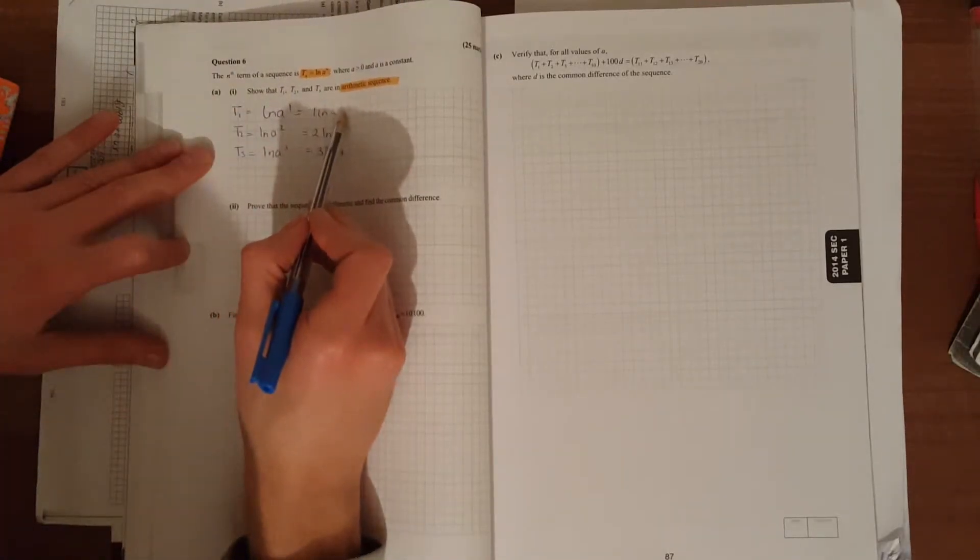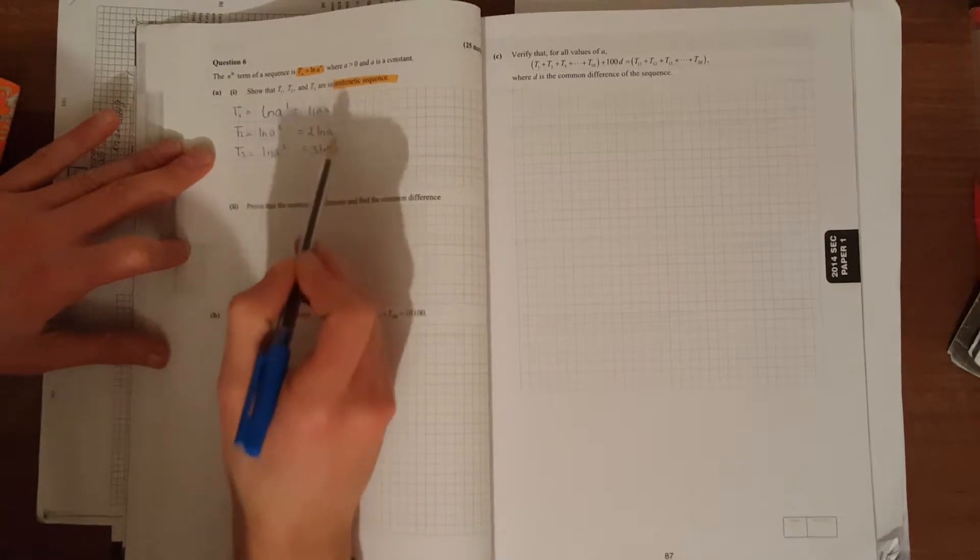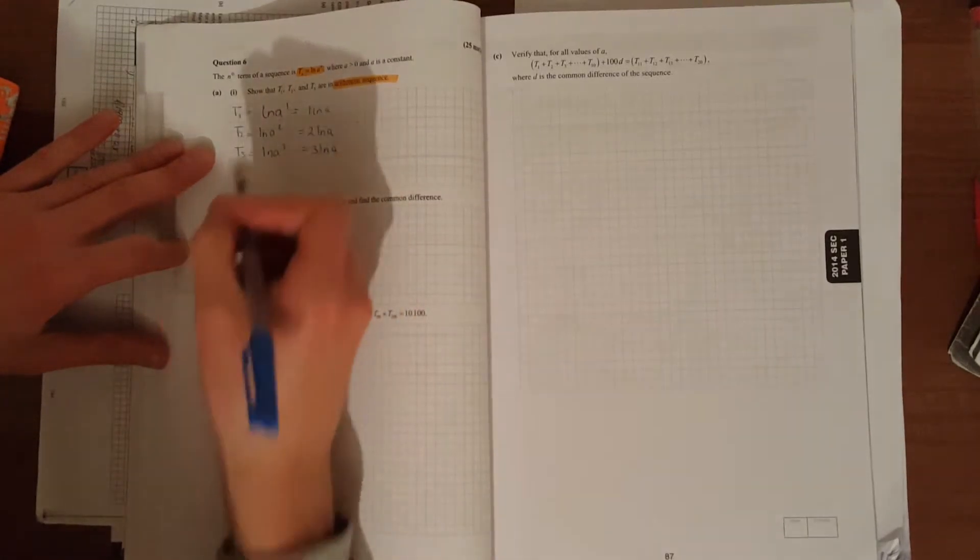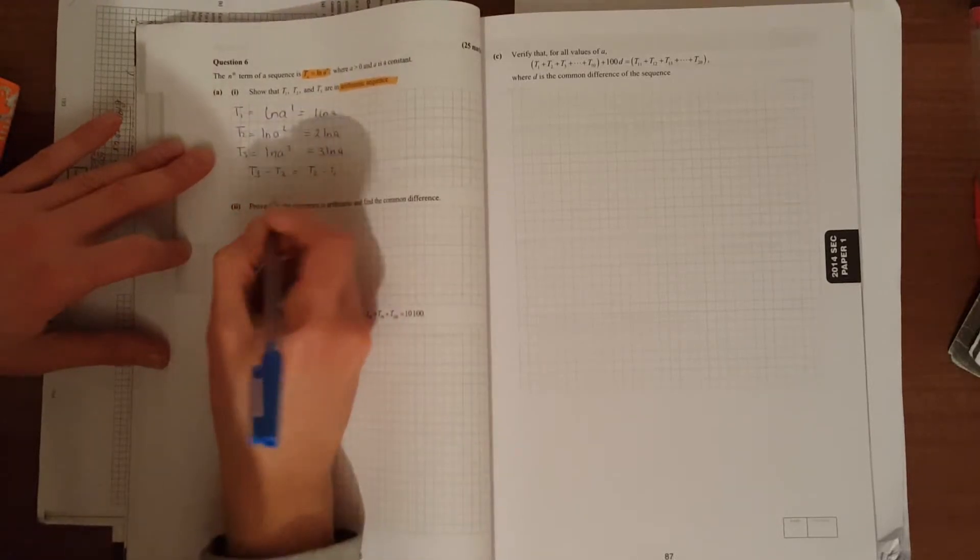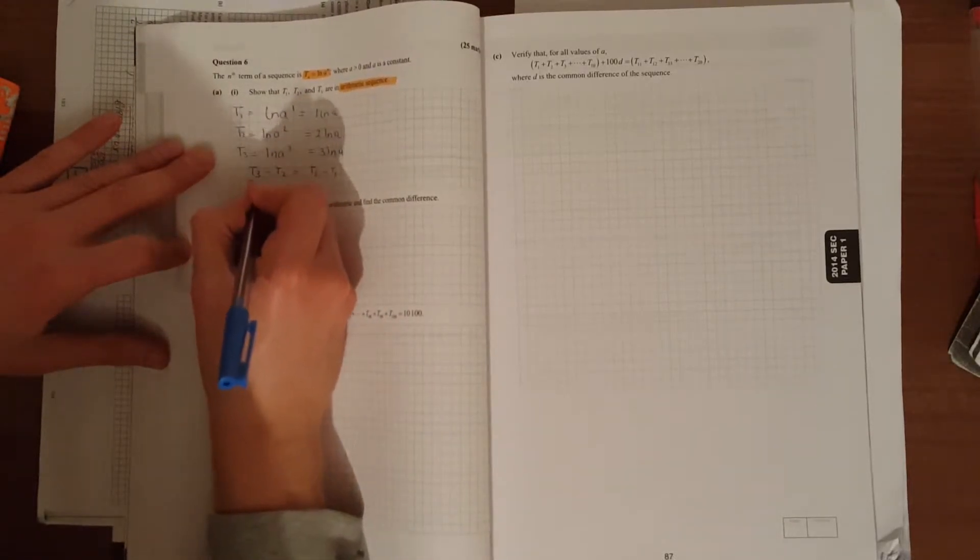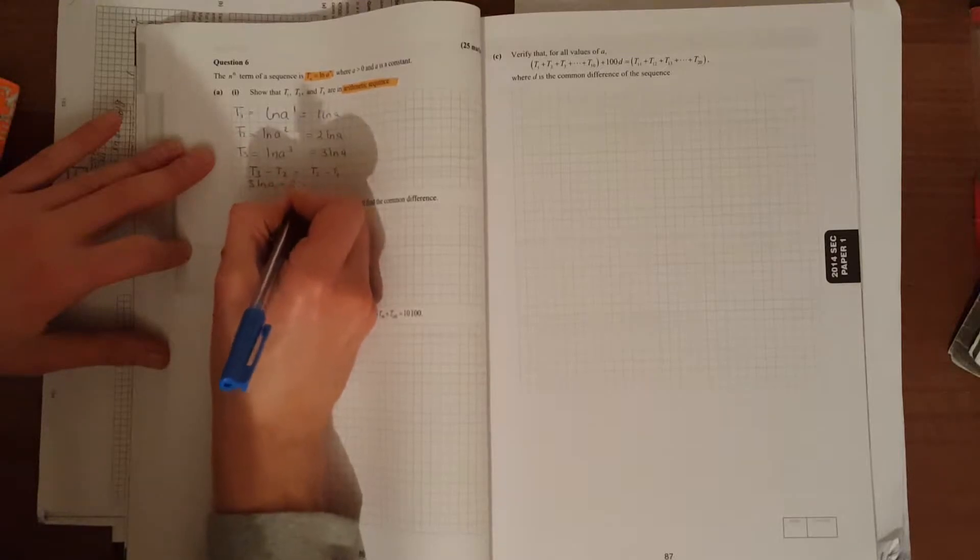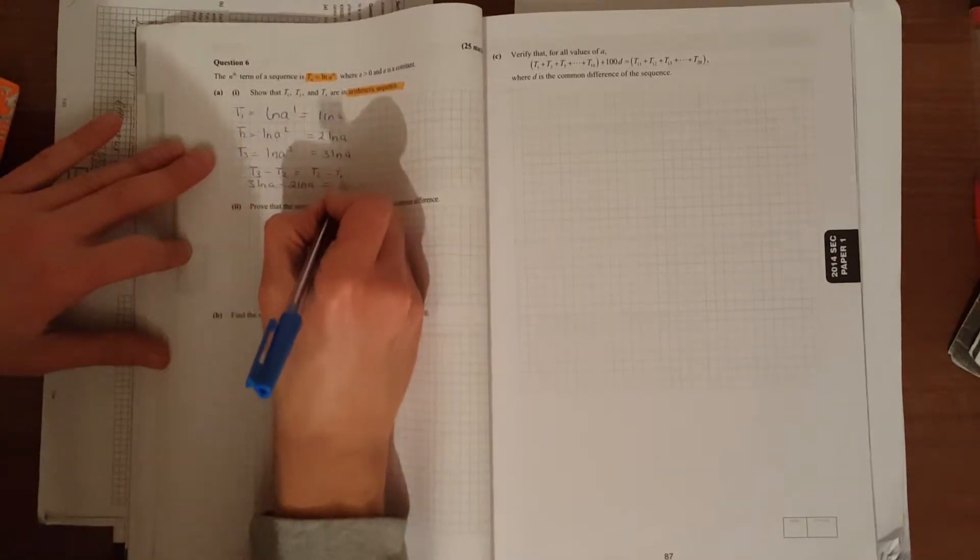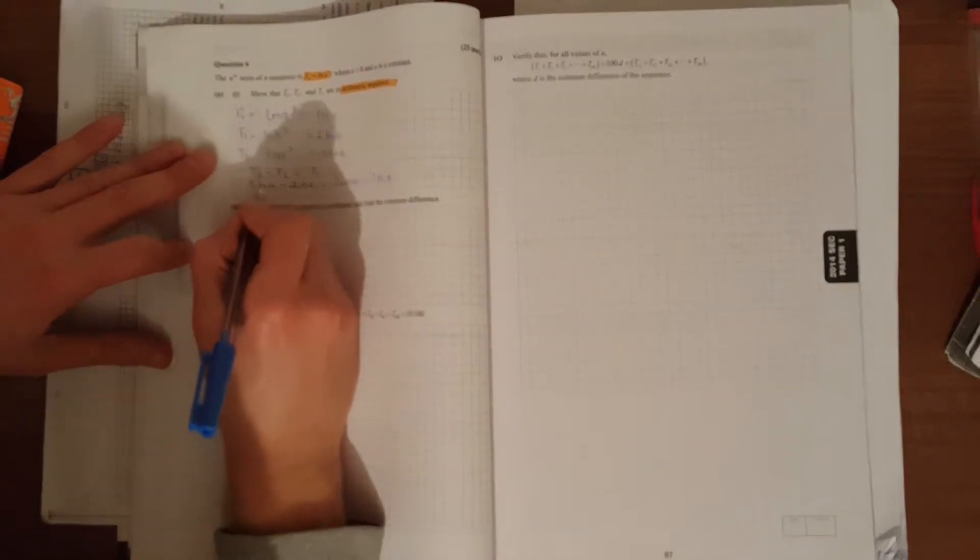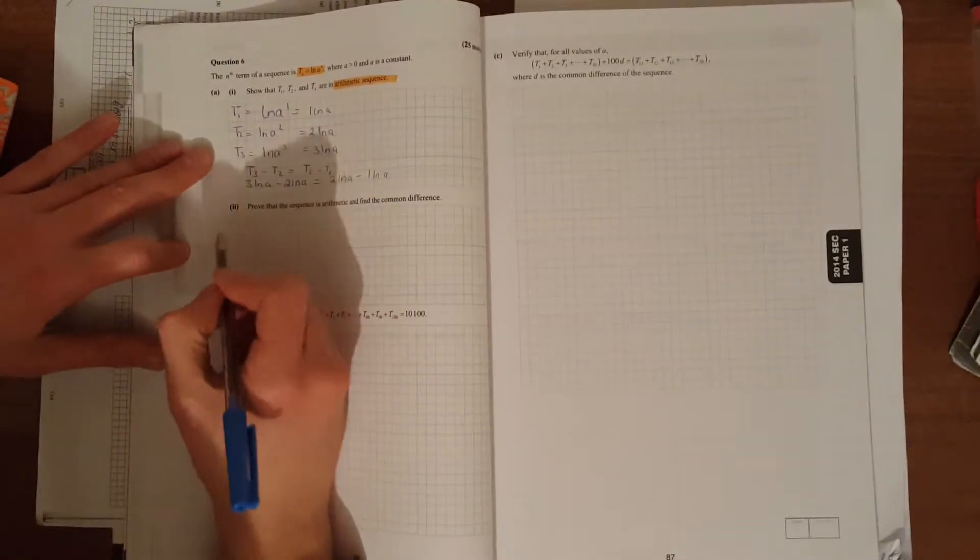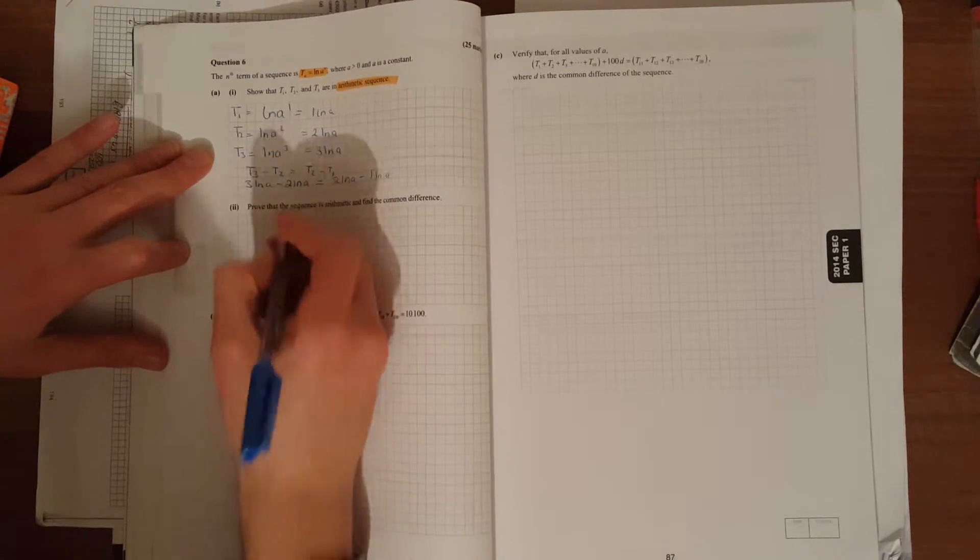The difference between t1 and t2 is the same as the difference between t3 and t2. So t3 minus t2 equals t2 minus t1. 3·ln(a) minus 2·ln(a) should be the same as 2·ln(a) minus 1·ln(a). That's like 3x minus 2x is 1x.